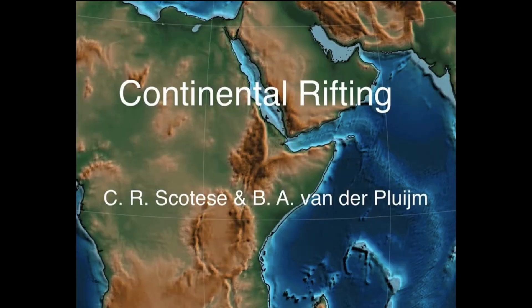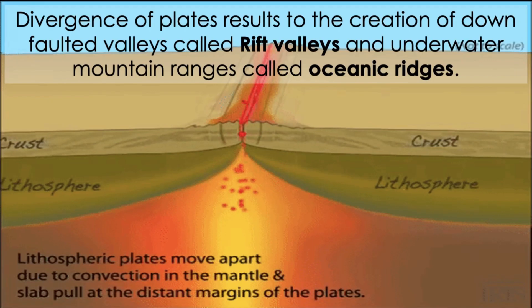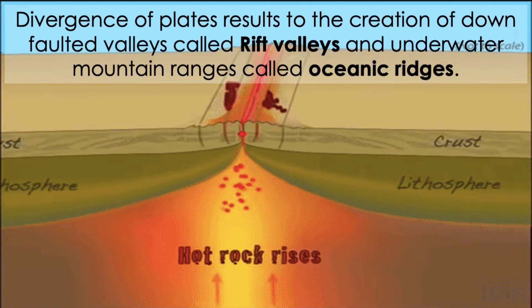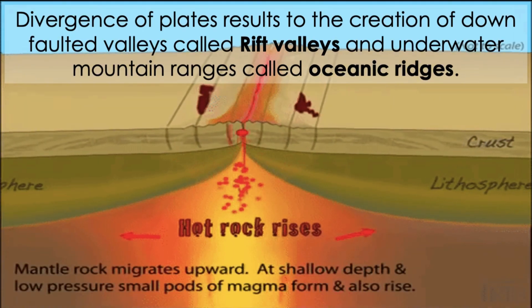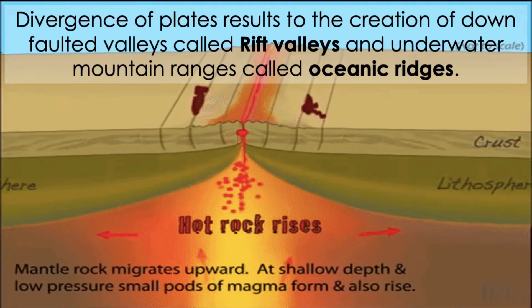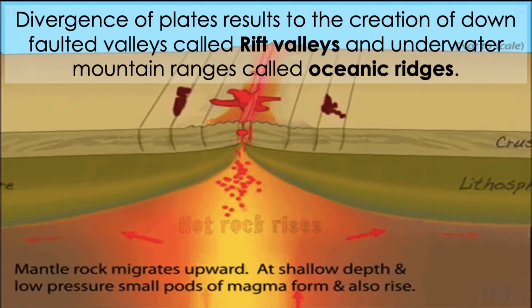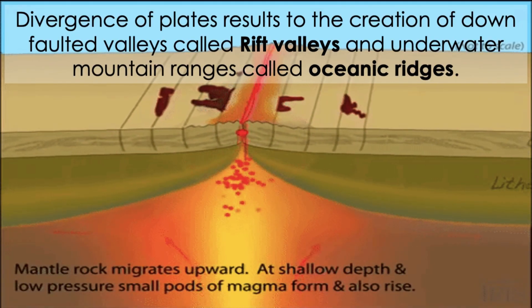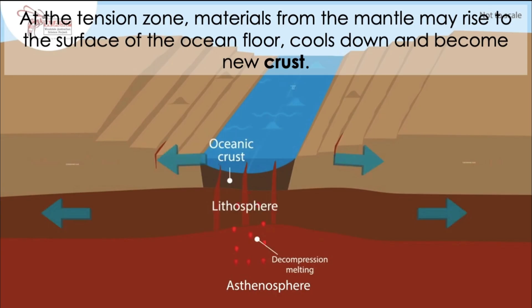On land, divergent boundaries cause the continental crust to stretch and thin. This can lead to rifting, where the crust splits and pulls apart, forming new features. Divergence of plates results in the creation of down-faulted valleys called rift valleys and underwater mountain ranges called oceanic ridges. At the tension zone, materials from the mantle may rise to the surface of the ocean floor, cool down, and become new crust.